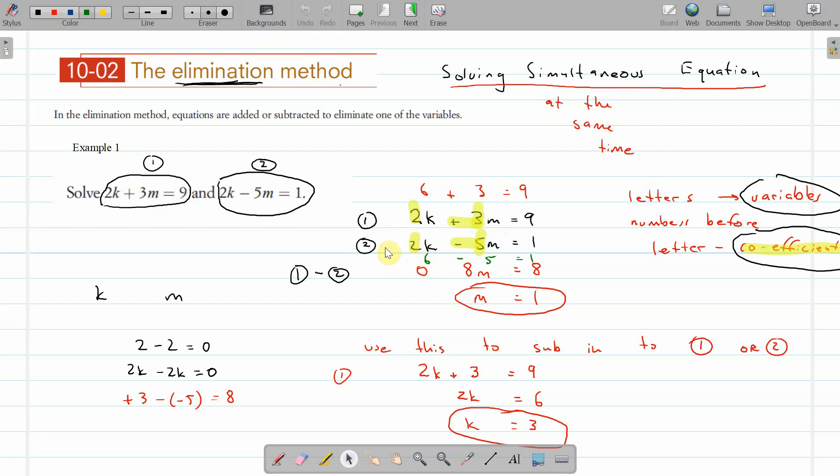We subtract 2 minus 2 is 0, 2k minus 2k is 0. And then what we've done is eliminate one variable, so then we can solve it. And finally when we've solved it, we can use this solution to sub in back to one of the other original equations to find out the other variable.